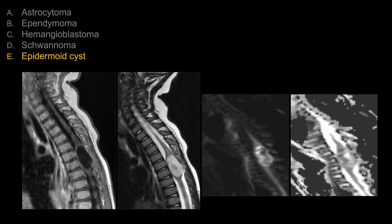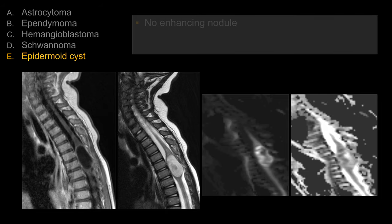The correct diagnosis here is choice E, epidermoid spinal cyst. Let's look at some of the key features that make choice E the best answer. First of all, on post-contrast sequence, you can see there's no enhancement — no central enhancing neural nodule or enhancing component.